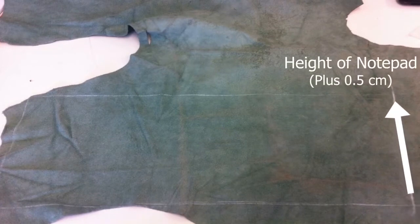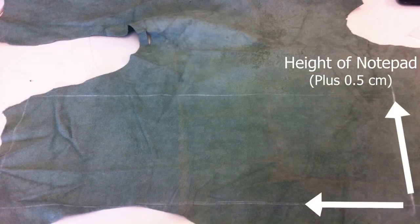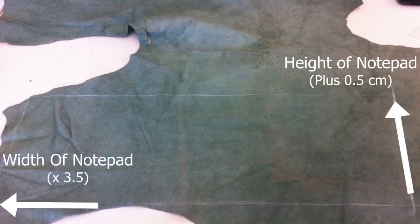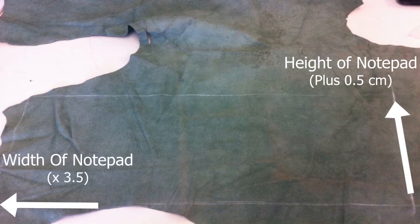Take measurements, draw a rectangle on the inside of your leather and cut it out. The height of your rectangle should be the height of the notepad plus half a centimeter for the seams. The width of your rectangle should be the width of the notebook times 3.5. It needs to go around 1.5 times.